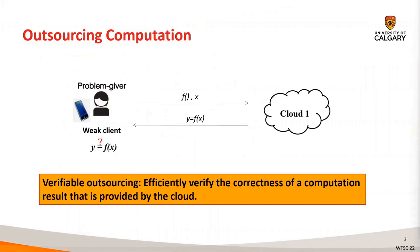Outsourcing computation enables weak clients with low computational power to outsource computationally intensive tasks to powerful but untrusted computational services, for example, clouds. Since the cloud server is untrusted, it raises a security concern that the server may provide an arbitrary or incorrect result of the outsourced computation. Therefore, the question in outsourcing computation is how the client can efficiently verify that the computation was performed correctly.